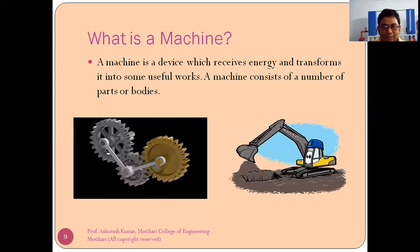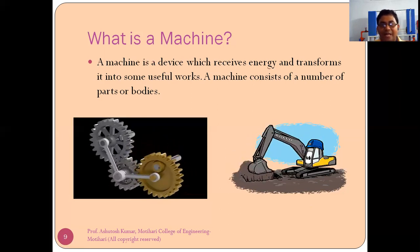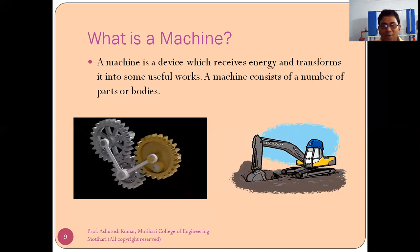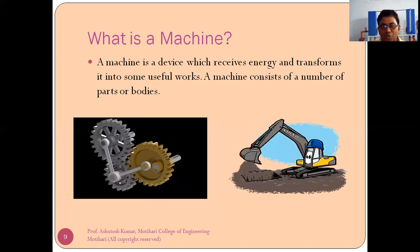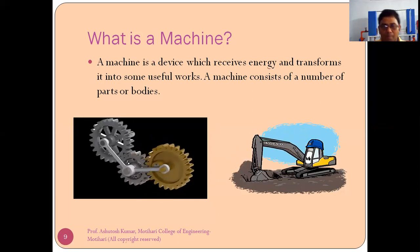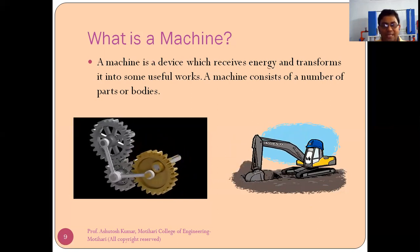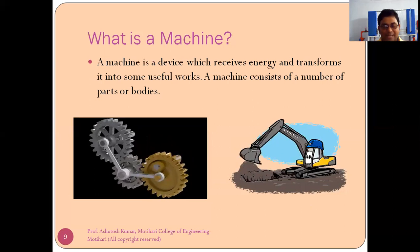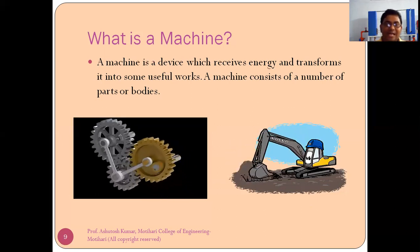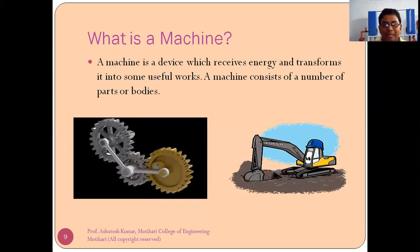So, a machine is a device which receives energy and transforms it into some useful work. A machine consists of a number of parts or bodies. If you talk about any machine, like our body is made of many parts, many bodies.